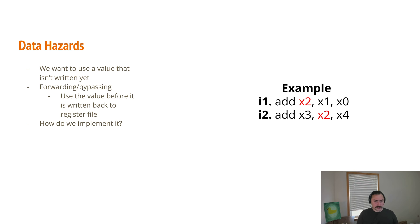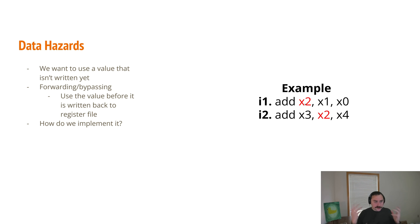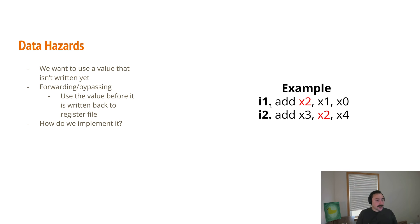We talked about how we can avoid some of these stalls and pipeline bubbles with the concept of forwarding and bypassing. The idea is that we already have the value calculated somewhere in our pipeline — we actually know the value of x2 after the execute stage. So instead of waiting for that value to be written back to the register file, we can forward it directly back to the ALU so i2 can use that value as well. We still need to write the contents of x2, but we can forward the value to the next instruction that wants to use it.